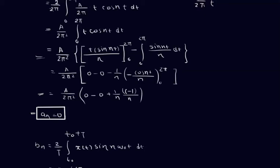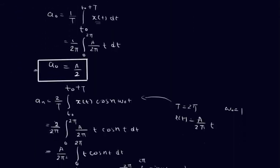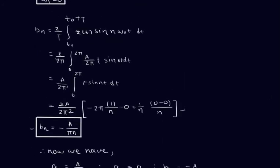Remember: if a function is not mirrored about the y-axis, the values of an will be 0. Now for bn: bn = (2/T)·∫[0 to 2π] x(t)·sin(n·ω0·t) dt. Substituting all values and applying integration by parts, we ultimately get bn = −A/(πn).